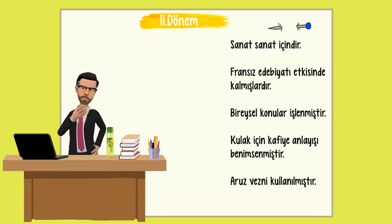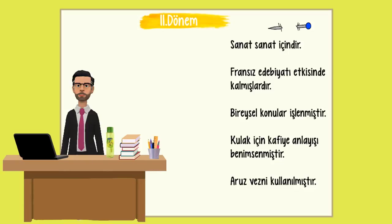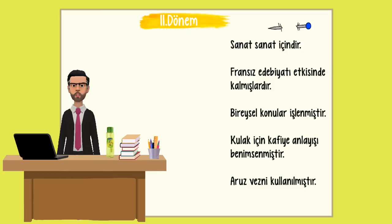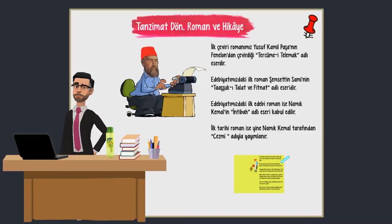Şimdi 2. Dönem özelliklerine bakalım. Sanat sanat içindir anlayışı hakimdir. Fransız edebiyatı etkisinde kalmışlardır. Bireysel konular işlenmiştir. Kulak için kafiye anlayışı benimsenmiştir. Aruz vezni kullanılmıştır.